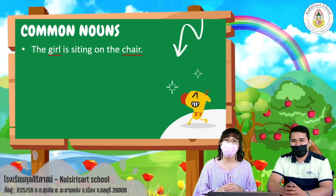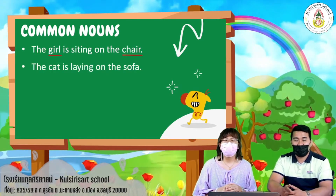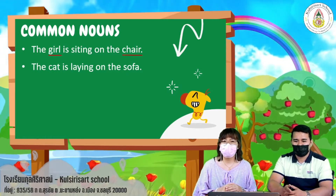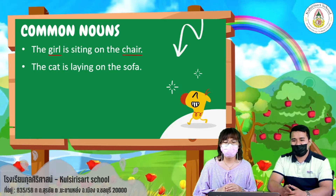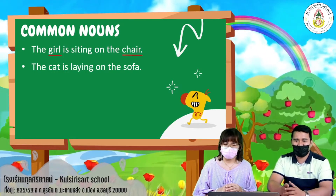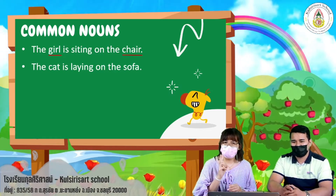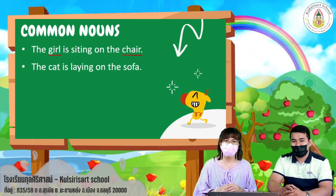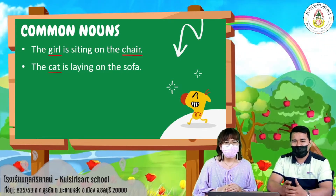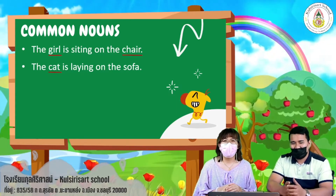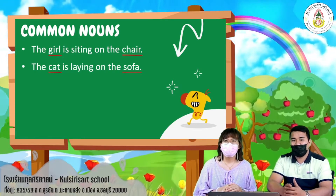Next sentence: 'The cat is laying on the sofa.' We have two common nouns in this sentence. The first is cat, and the next is sofa.